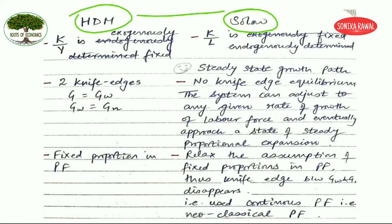The first difference is that the Harrod-Domar model considers the K/Y ratio as exogenously fixed or exogenously given, whereas the Solow model considers the K/L ratio — note here it was K/Y, but in Solow it is K/L — as endogenously determined.